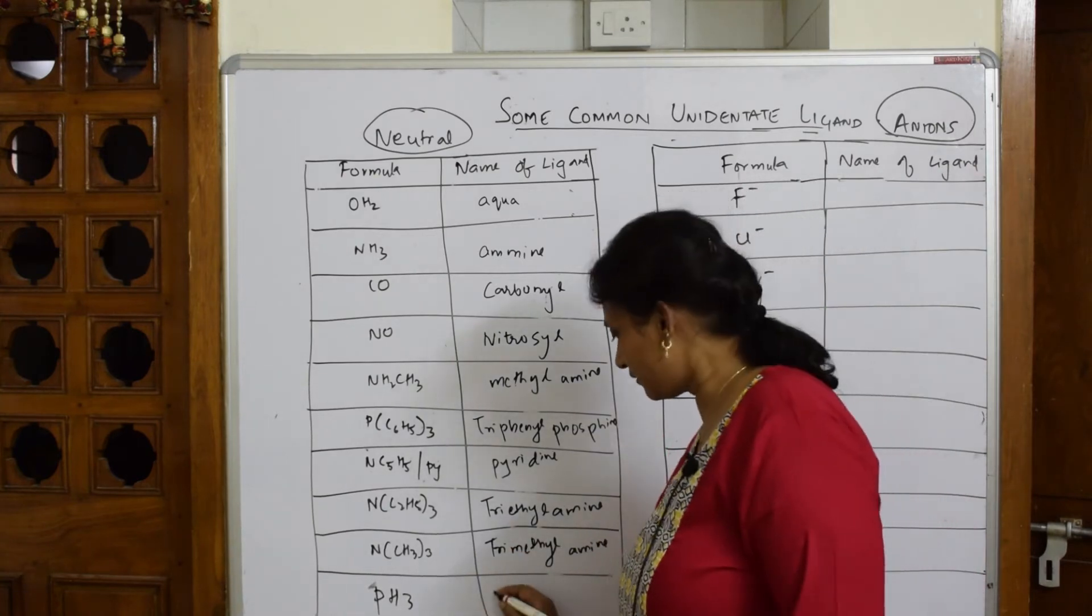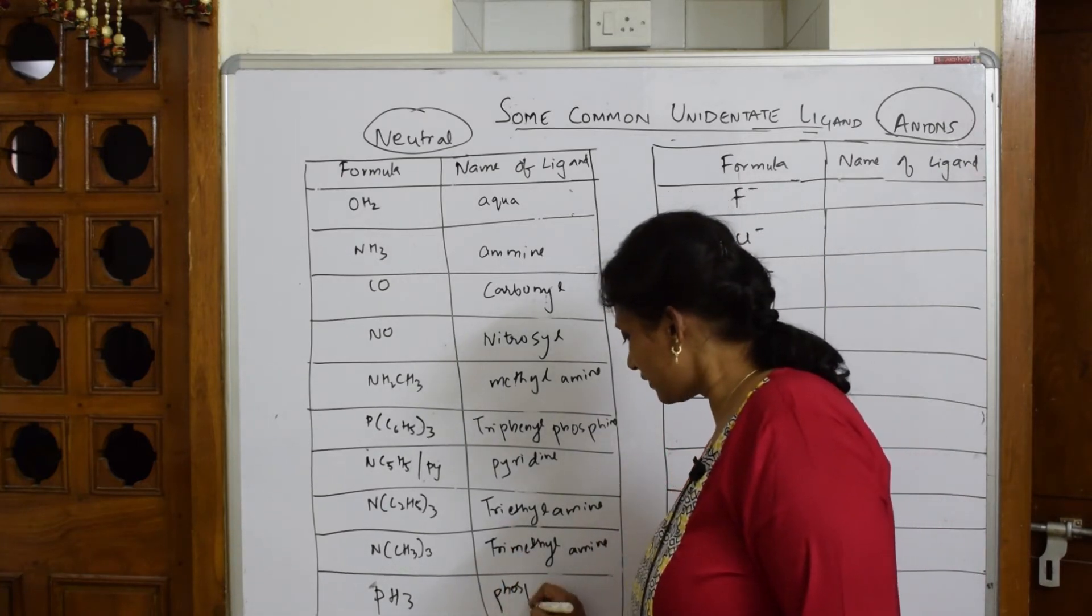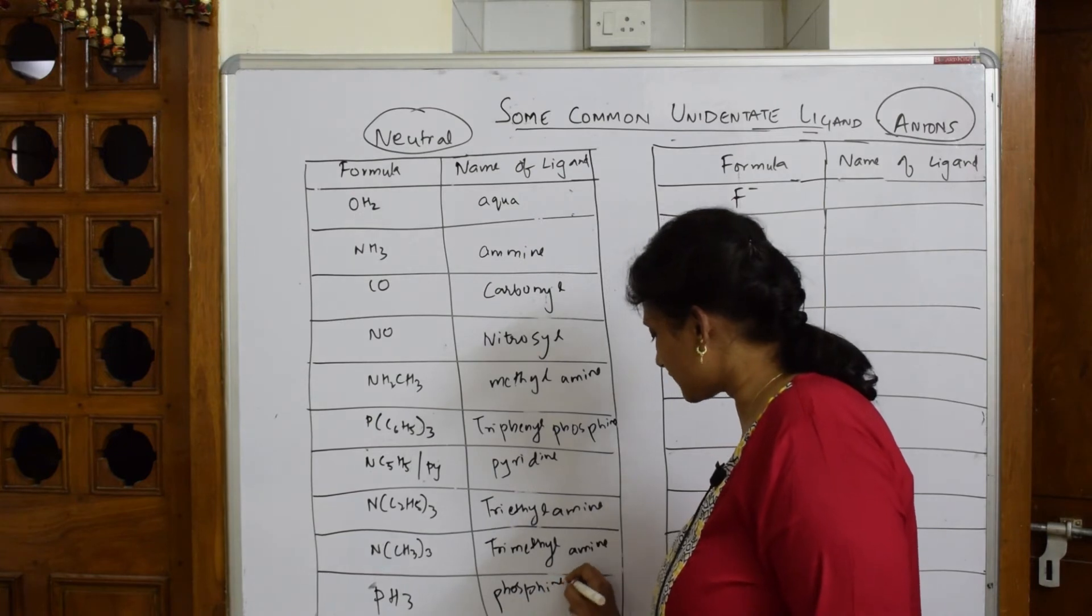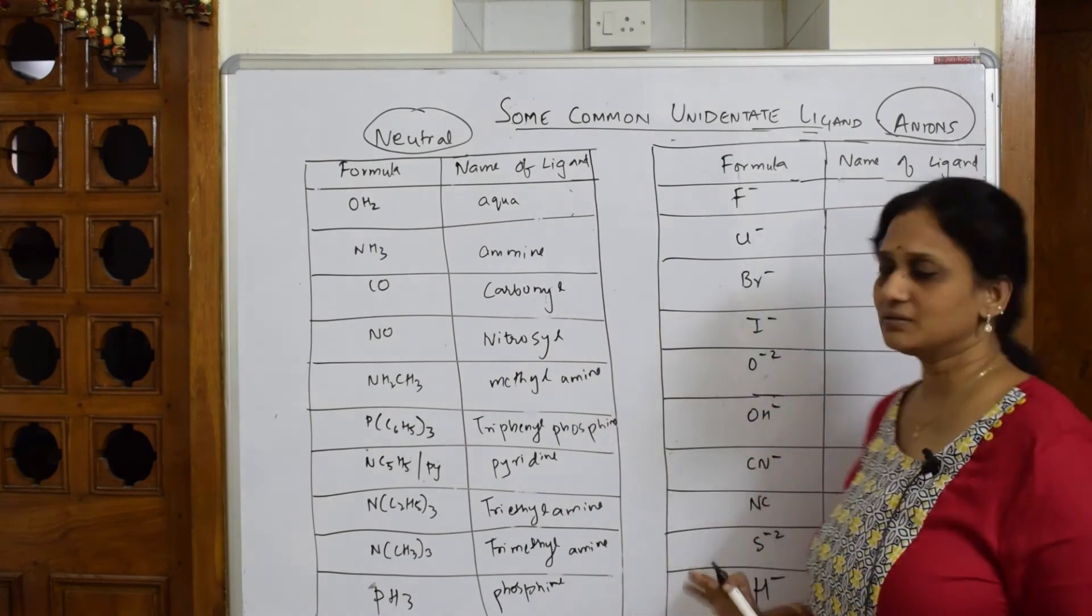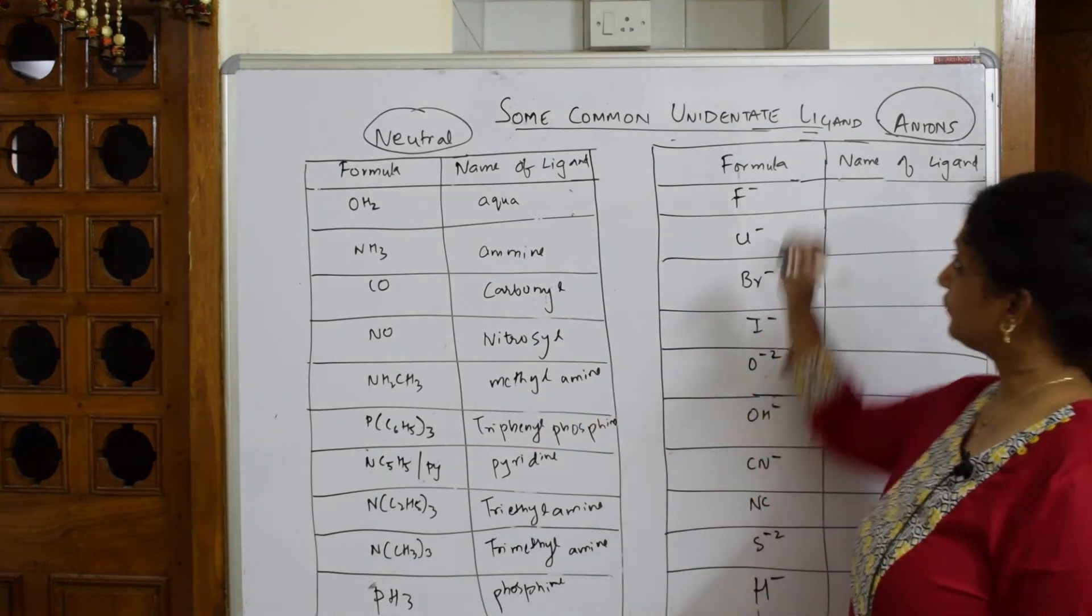PH3 is nothing but phosphine. So whenever you're finding such ligands—neutral ligands—you will directly write the common name which you know. It's simple, the usage whatever you use.